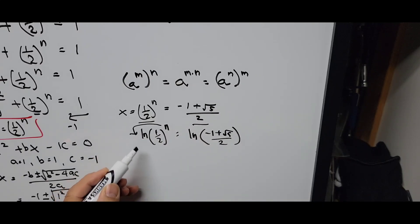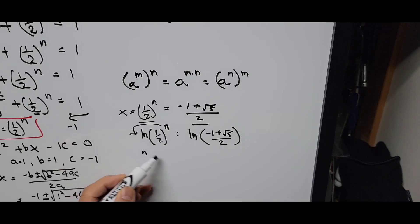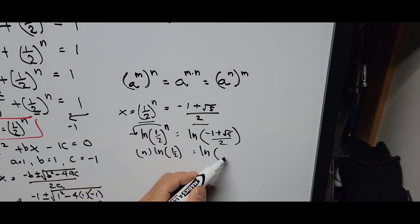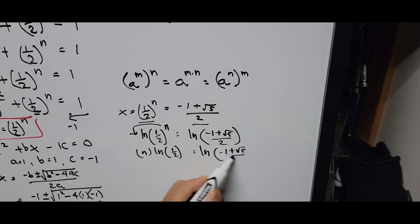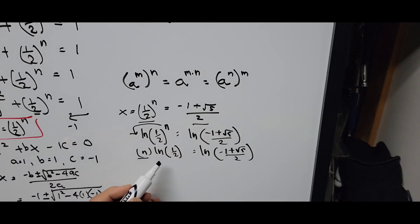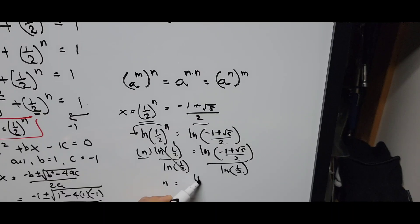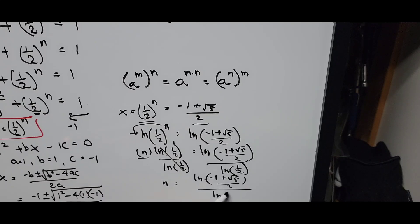Bringing the exponent n down as a coefficient: n · ln(1/2) = ln((−1 + √5) / 2). Dividing both sides by ln(1/2), the left side reduces to n, giving the final answer: n = ln((−1 + √5) / 2) / ln(1/2). That is the value of n and our final answer.